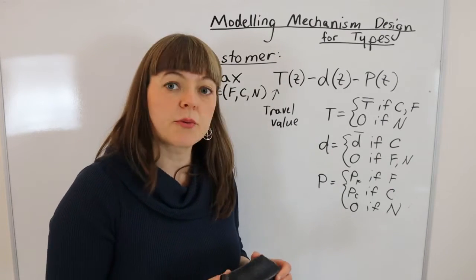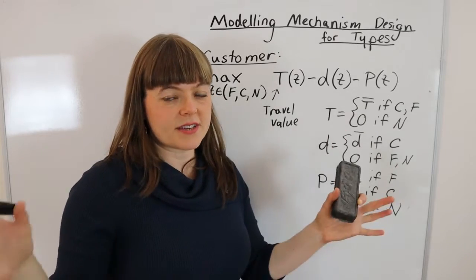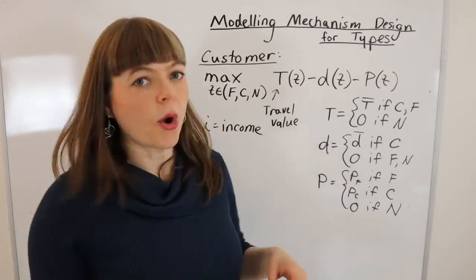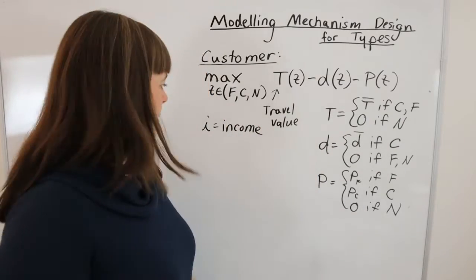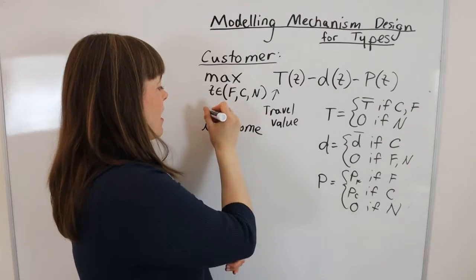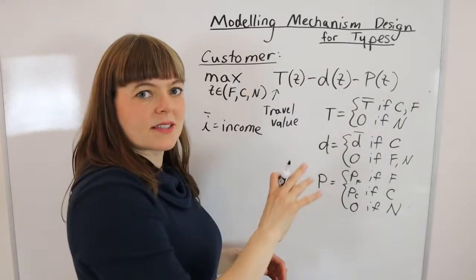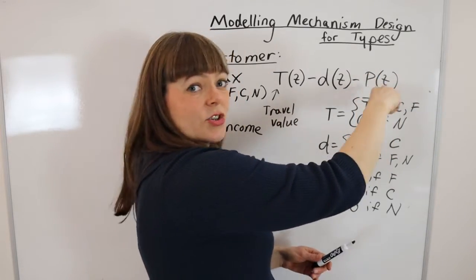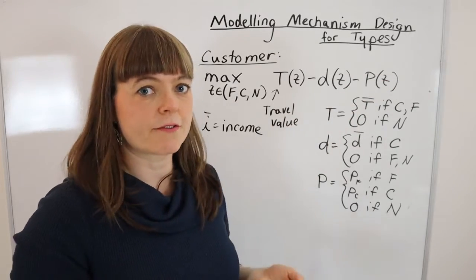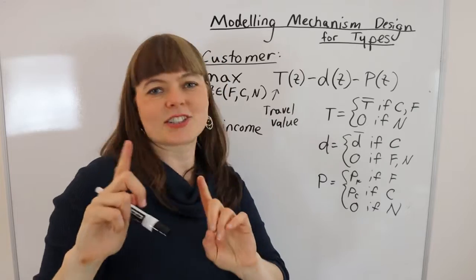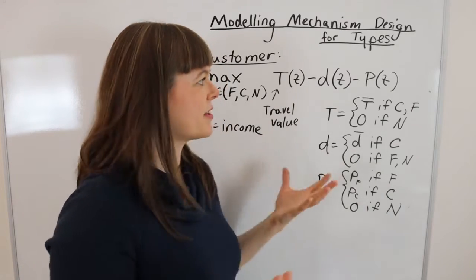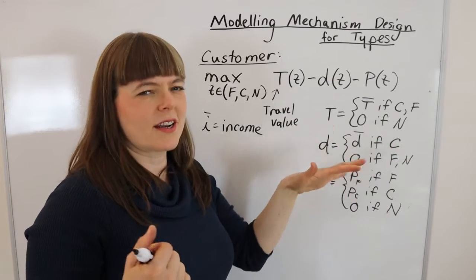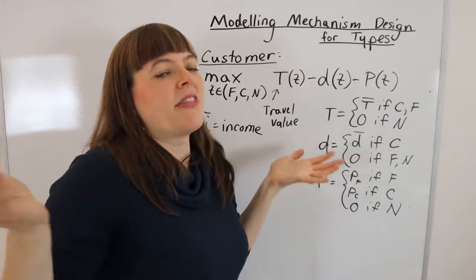Something is missing from this model: income. We want to separate types of people by income so that some choose first class, some choose coach, and some don't buy tickets at all. Income is an exogenous variable, so we need to place it somewhere in the model. The natural place relates to the money term — we know that paying a price is less painful for higher-income people. Let me intentionally make a mistake that students often make and then fix it, because that's a natural part of the modeling process.